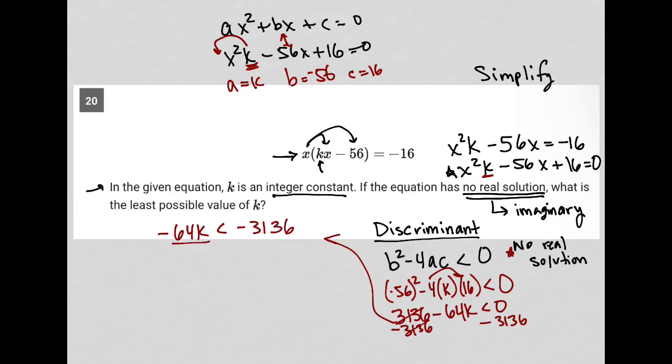Dividing by -64, and when dividing by a negative in inequalities, the symbol switches direction. So less than becomes greater than, and -3,136 divided by -64 equals 49. So k > 49.